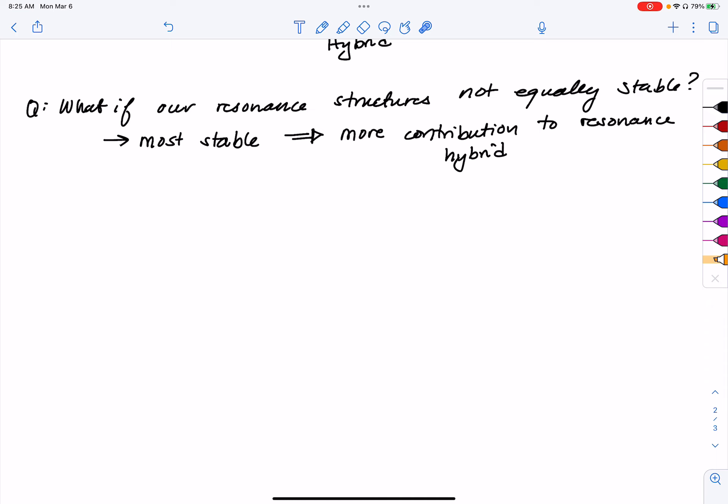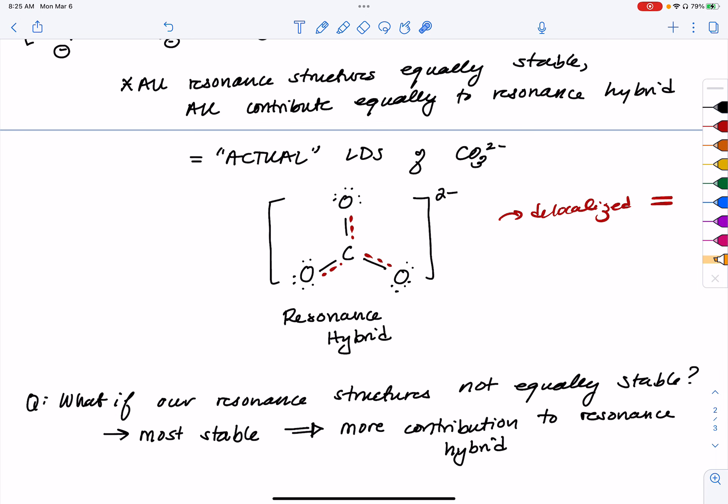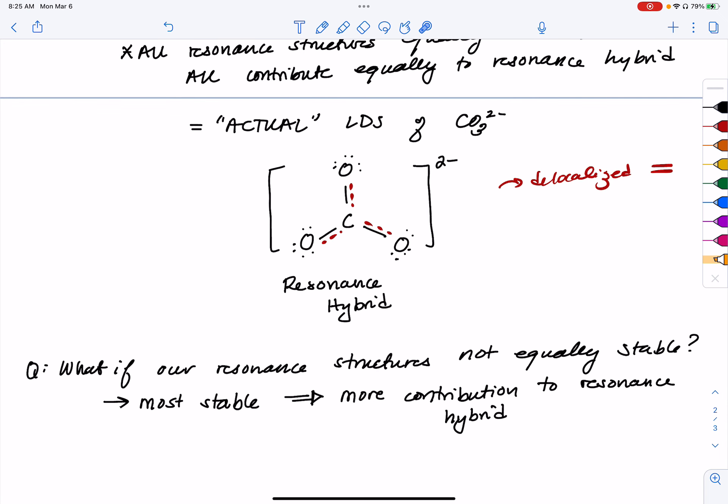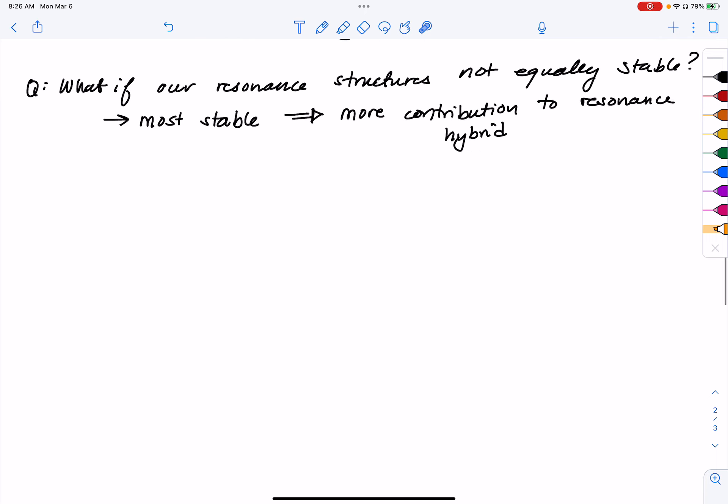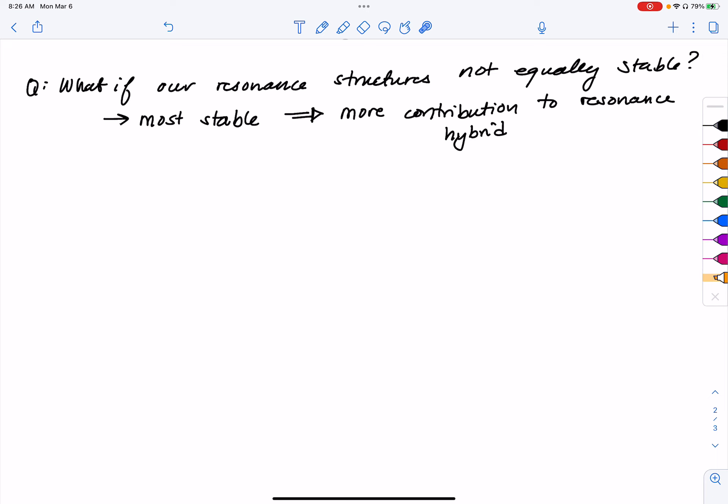So when we talk about resonance hybrids, they exist for any structure that has multiple different resonance structures, but often it's only the ones that are hypersymmetric like this one where we will talk about the resonance hybrid as having any kind of bearing on the shape of the molecule, which we're going to talk about coming up soon, compared to those that are not equally stable. So if you have resonance structures and there's one that is very obviously more stable than the other, it's okay to go ahead and call that one in my class at least the Lewis dot structure.